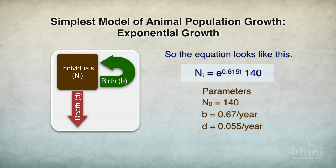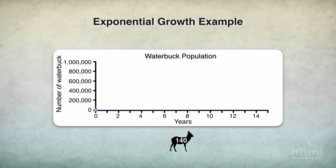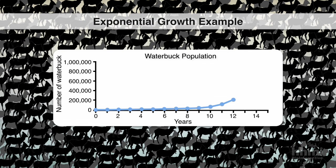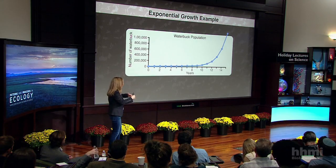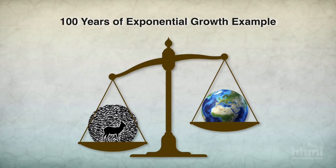We take those parameters to our equation — e^{rt} with r equal to birth minus death — plug them in, and plot the growth curve. The result shows exponential growth that really explodes. Within 14 or 15 years you would get past 1 million waterbuck. Within 100 years, the amount of waterbuck would actually weigh more than planet Earth, which tells us something is slightly wrong with our model. Something else must be happening to temper this exponential growth.